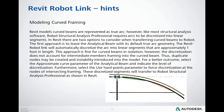Modeling hints are on slide 21, but here are a few words about curved elements. Revit models curved beams as true arcs. However, like most structural analysis software, Robot Structural Analysis requires arcs to be discretized into linear segments. In Revit, there are two options when transferring curved beams to Robot: the first approach is to leave the analytical beam with its default arc geometry — the Revit-Robot link will automatically discretize the arc into linear segments approximately one foot in length. For a better outcome, select an approximate curve parameter of the analytical beam and indicate the level of discretization.